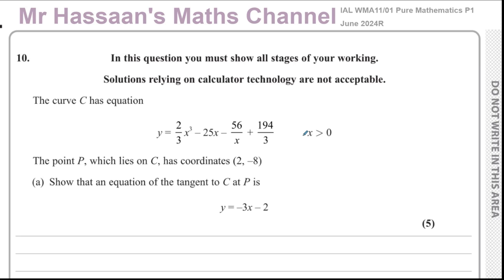Sands Mass Channel. I'm now answering question number 10 from the June 2024 replacement R paper for the Pure Mathematics P1 International A-Level and Excel exam. In this question, we're told about the curve C which has the equation y equals 2 over 3 x cubed minus 25x minus 56 over x plus 194 over 3, where x is greater than zero. The point P which lies on C has coordinates 2, negative 8. Show that an equation of the tangent to C at P is y equals minus 3x minus 2.